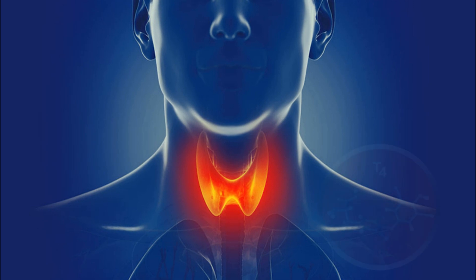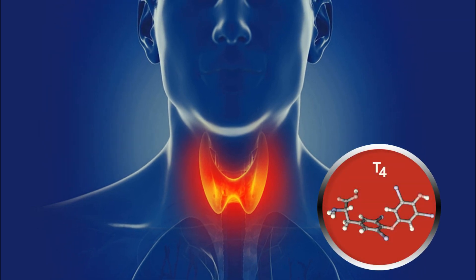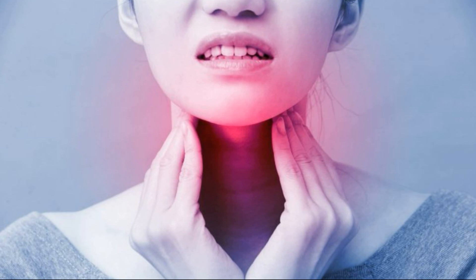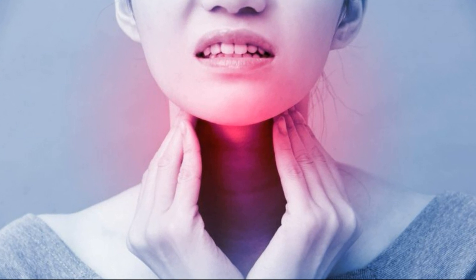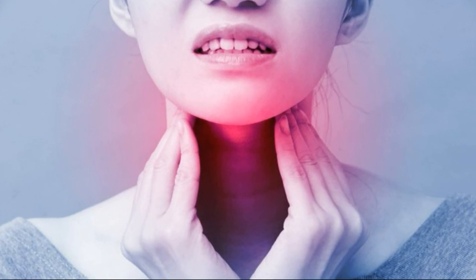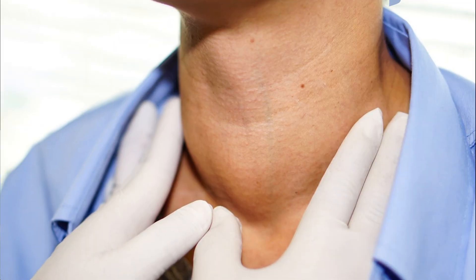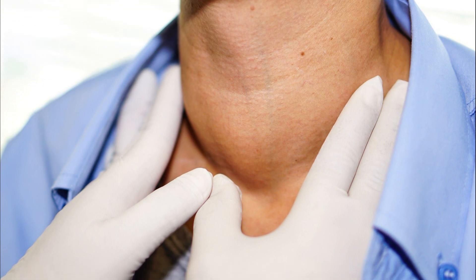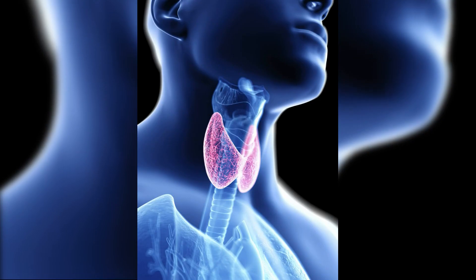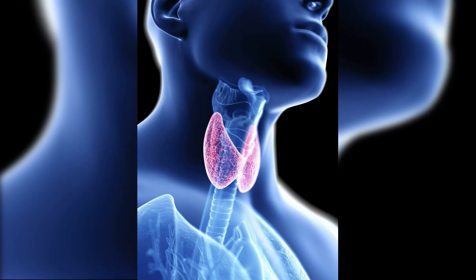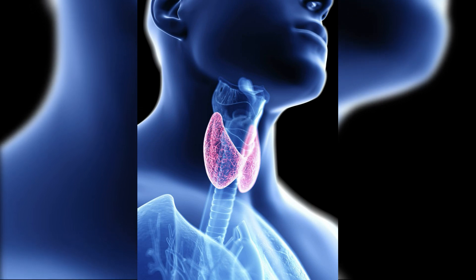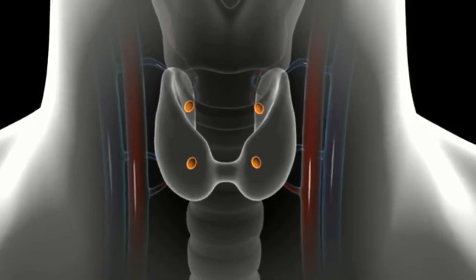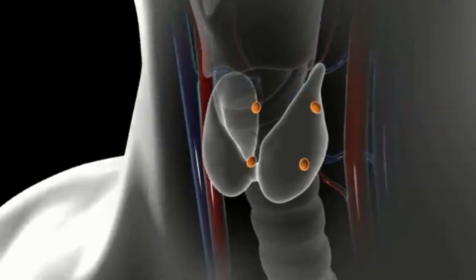The thyroid gland produces thyroxine, or T4, which is later converted to T3. T4 and T3 are the two main hormones that control energy production and regulate your metabolism, making all your organs work as they should. However, this tight regulation may go wrong due to any disturbance of thyroid gland function.